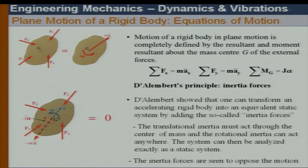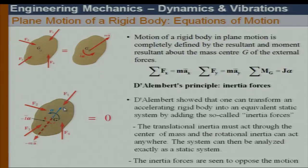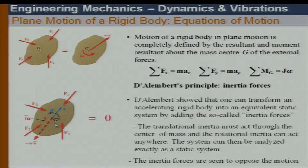For the rigid body planar motion, whenever we look at the body we add mass times acceleration at its CG — that is my translational inertia force — and there is also a rotational inertia force. These two forces always oppose the motion. J is the mass moment of inertia about the mass center.